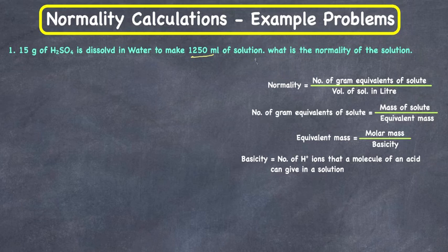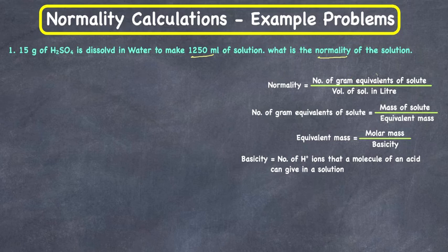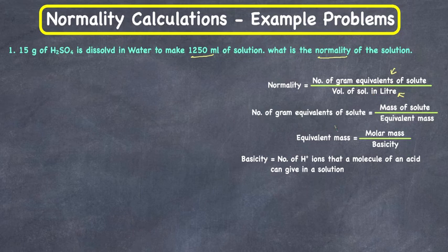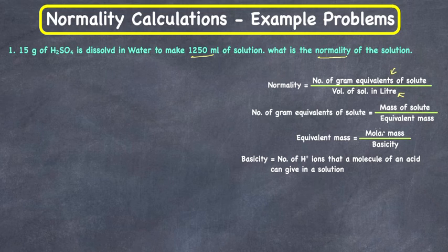On the right-hand side I have written down the formula for normality, which is equal to number of gram equivalents of solute divided by volume of solution in liters. Number of gram equivalents of solute is equal to mass of solute divided by equivalent mass — sometimes called equivalent weight. Equivalent mass is molar mass over basicity in the case of acids.